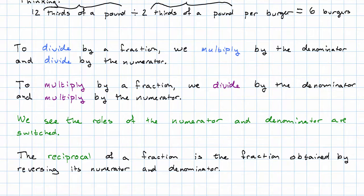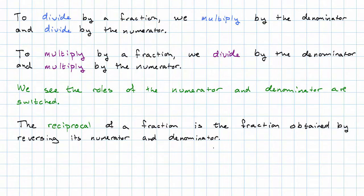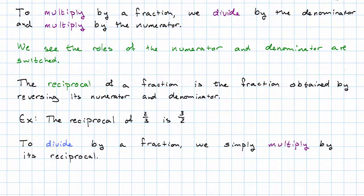The reciprocal of a fraction is the fraction obtained by reversing its numerator and denominator. So for example, the reciprocal of two thirds is three halves. And then based on what we just observed, we can see that to divide by a fraction, we simply multiply by its reciprocal.